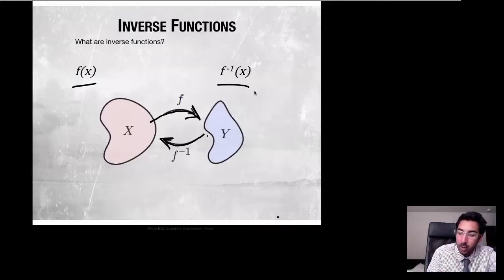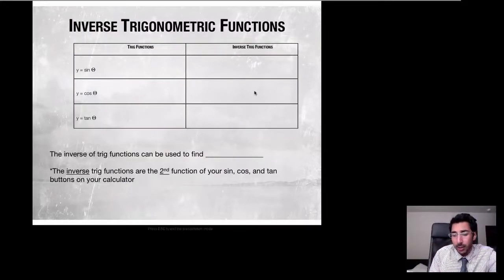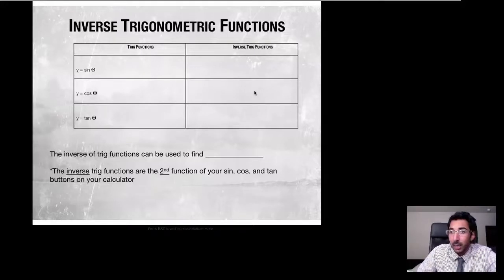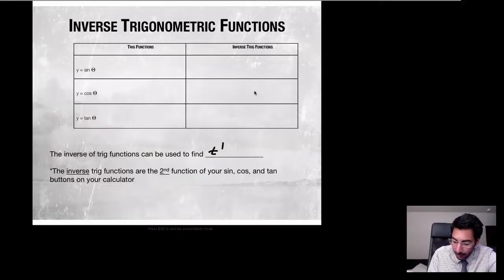With trigonometry, we have sine, cosine, and tangent. Usually we plug in an angle measure and get a coordinate or a ratio. For example, on the unit circle, sine of a degree measure gives us the y-coordinate. Inverse trig functions can be used to find the angle.